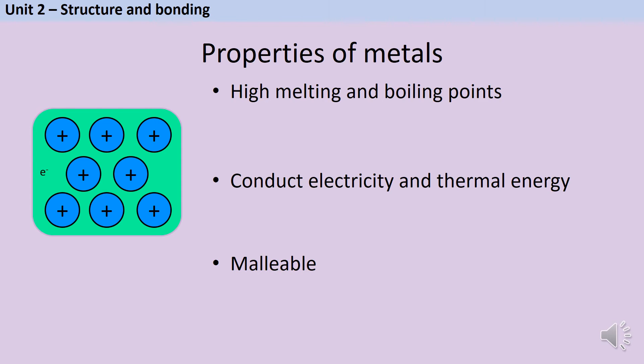The reason that metals have high melting and boiling points is because of that force holding the ions and electrons together. The electrostatic force of attraction is very strong, so it needs a lot of energy to overcome it, and at room temperature there just isn't enough energy, so that's why metals tend to be solids.